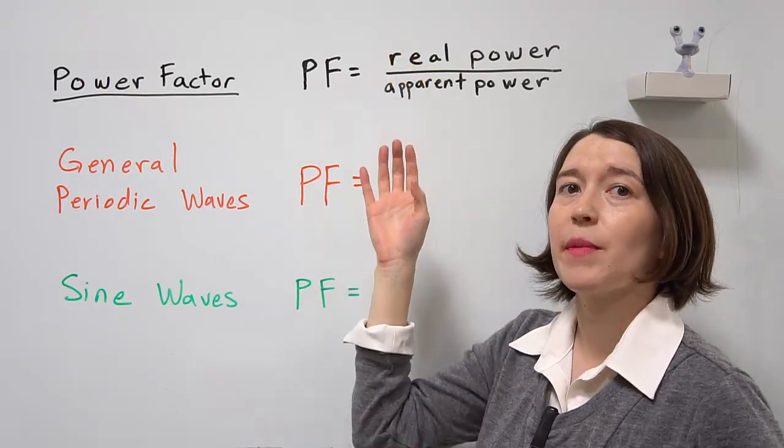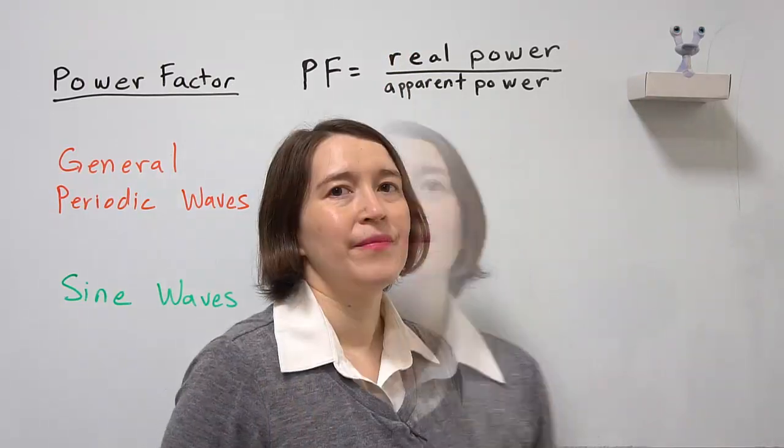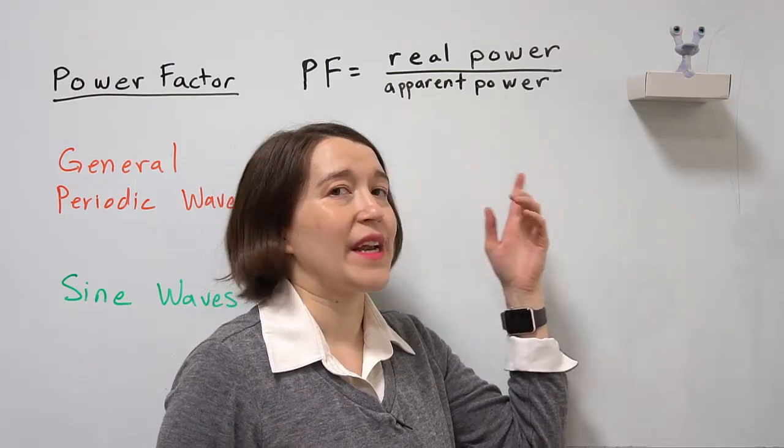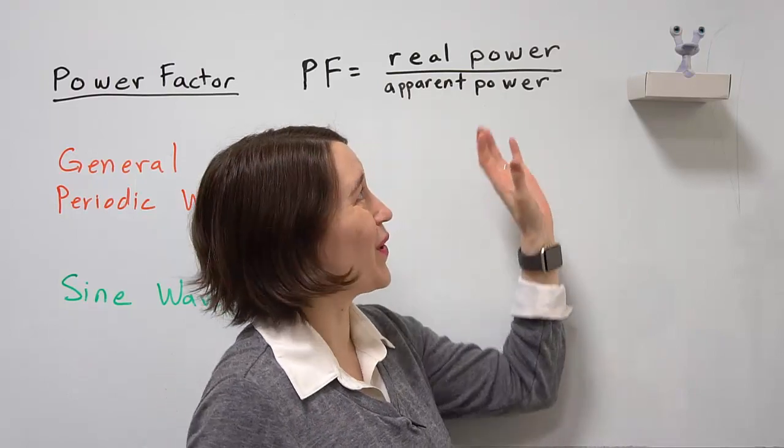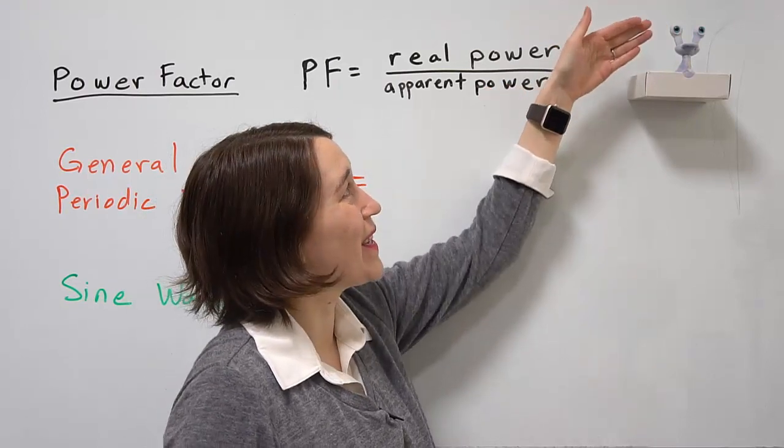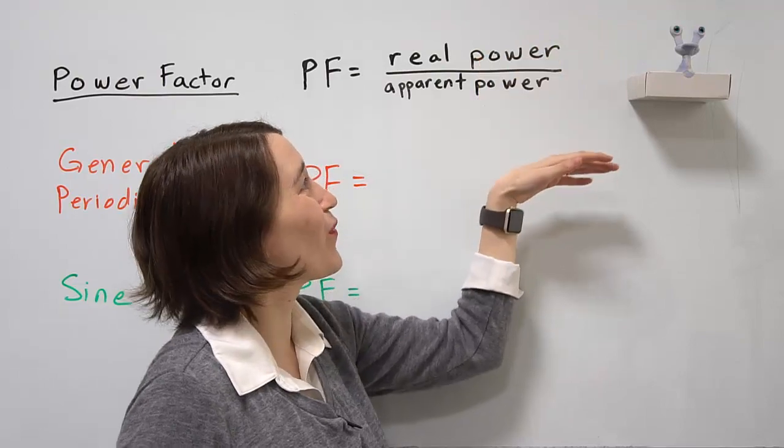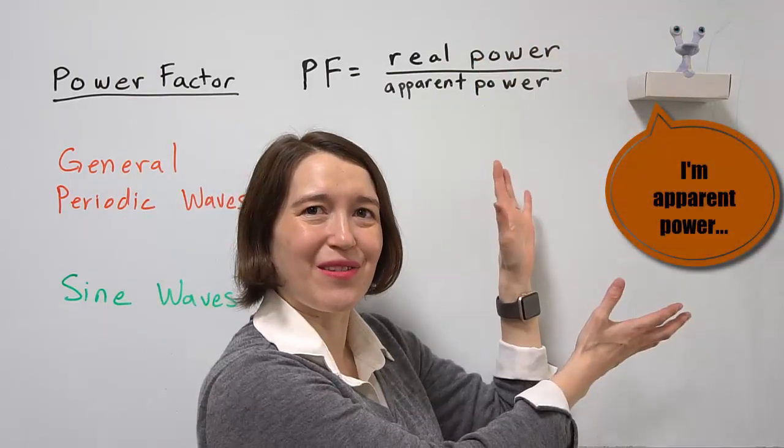We go back to our analogy of the package and Valerie. Then Valerie's our real power, so it's the amount of real power, Valerie, over the container.